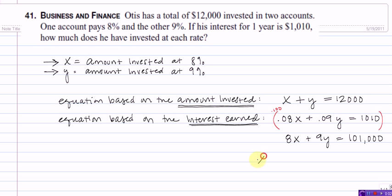So, our two equations are X plus Y equals 12,000 and 8X plus 9Y equals 101,000.